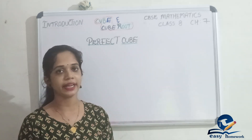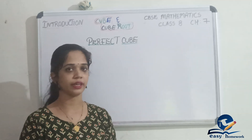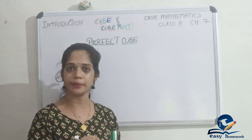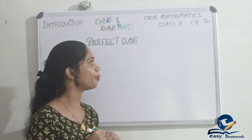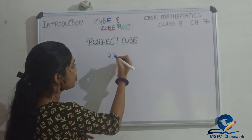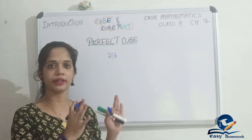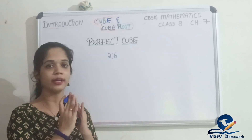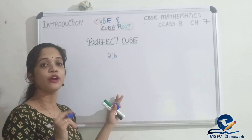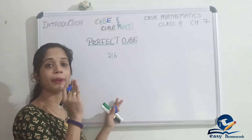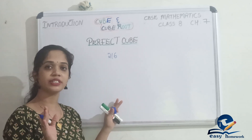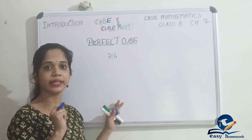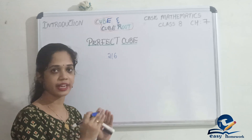Let's find something about 216. We'll write the number 216. Let's see how we treat it. The first step is to do prime factorization. Prime factorization of 216 means we divide 216 step by step.